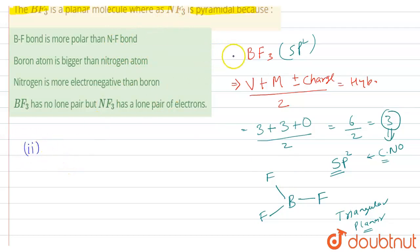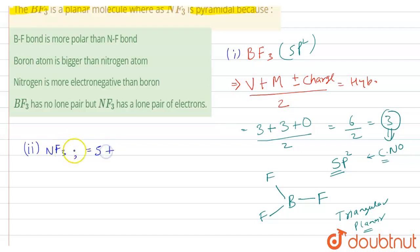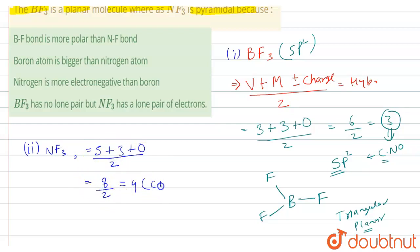In NF3, we have nitrogen and fluorine atoms. For hybridization, the number of valence electrons for nitrogen is 5, plus monovalent atoms equal to 3, plus charge is 0, divided by 2. That gives 8 divided by 2, which equals 4. Coordination number is 4, giving SP3 hybridization, and the structure is pyramidal.